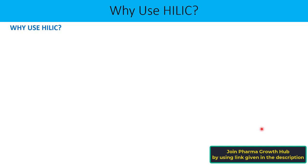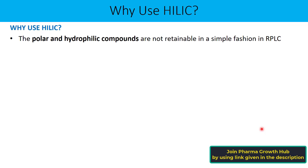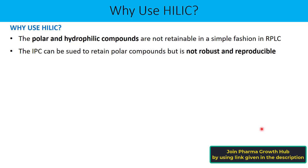Now, having understood what HILIC is and the different stationary phases available, let us discuss why to use HILIC over RPLC, NPLC, ion chromatography, or ion pair chromatography. First and foremost, polar and hydrophilic compounds are not retained well in RPLC. RPLC has a hydrophobic stationary phase suitable only for hydrophobic or non-polar compounds. If you have polar compounds like acids or bases, they will have very little retention time on RPLC. In that case, HILIC is the preferred choice.